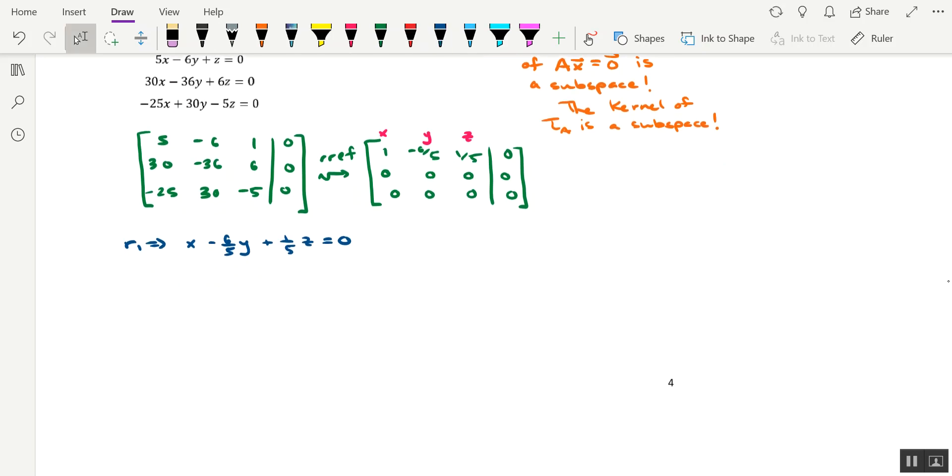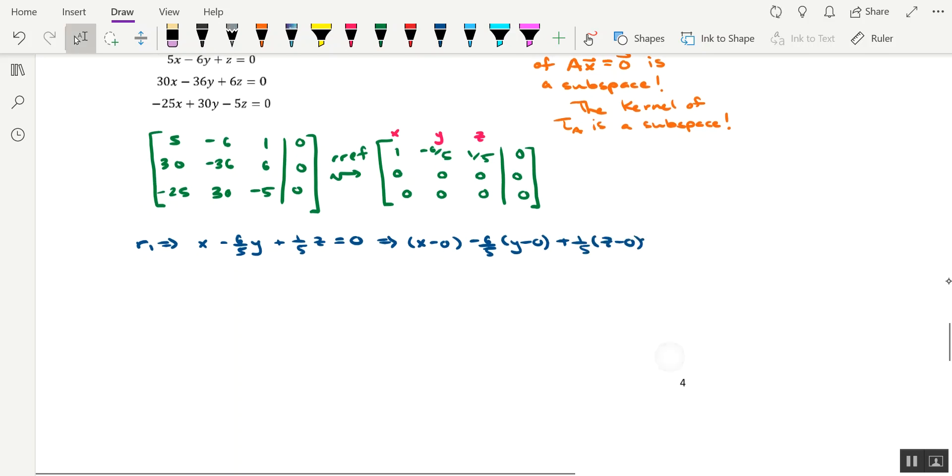Now, with the equation this way, I'm going to do a couple of things. This is equivalent to saying that x minus 0 minus 6 fifths times y minus 0 plus 1 fifth times z minus 0 equals 0. This would represent the point normal version, or component form, of a plane.